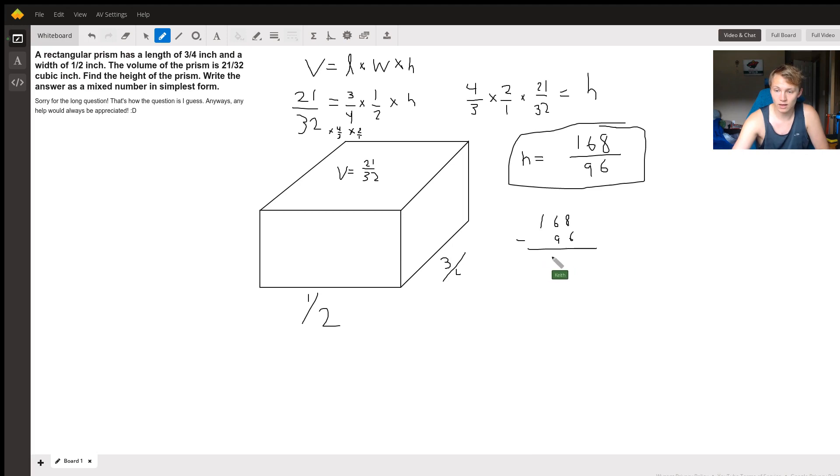And so now that is how much of 168 is left over after 96 has gone into it once. So now we know that h is equal to 96 over 96 plus 72 over 96.